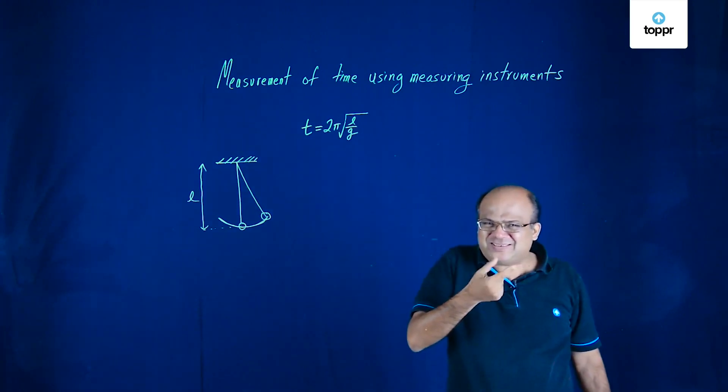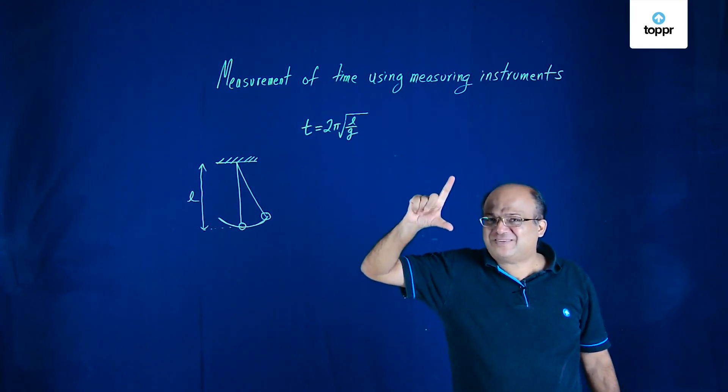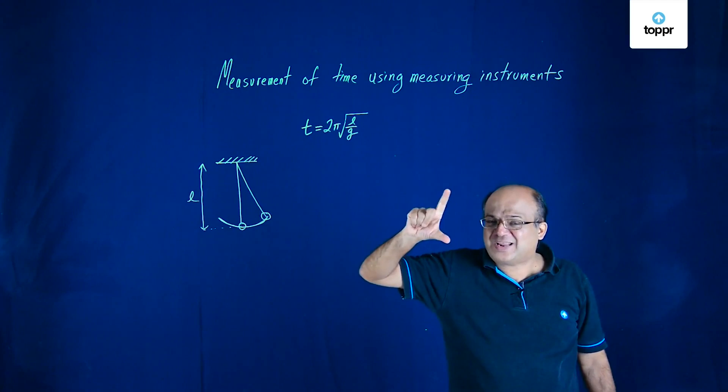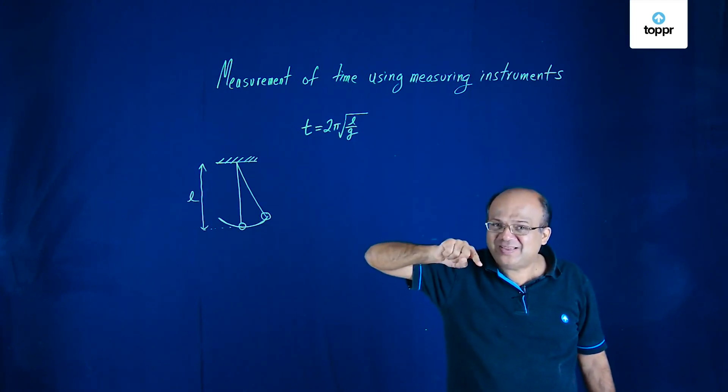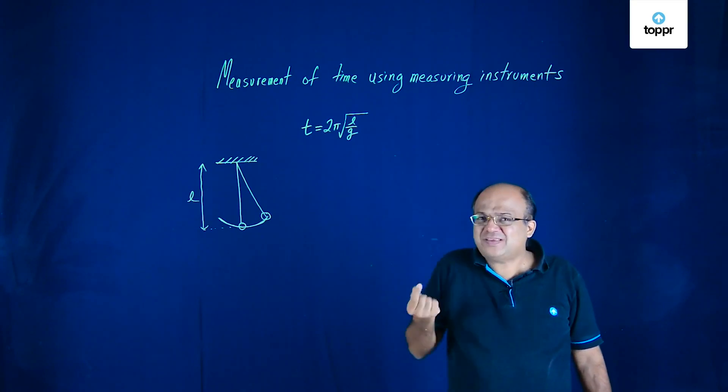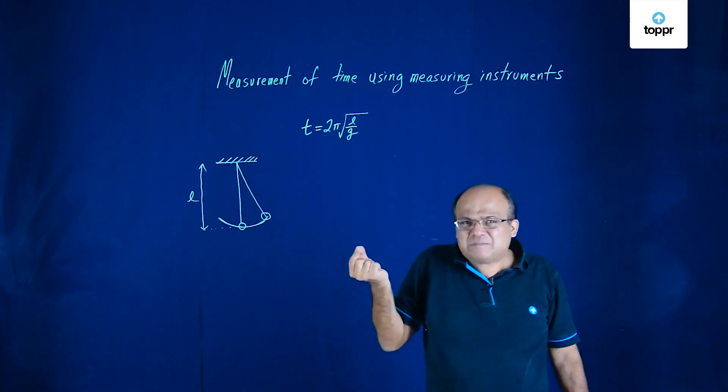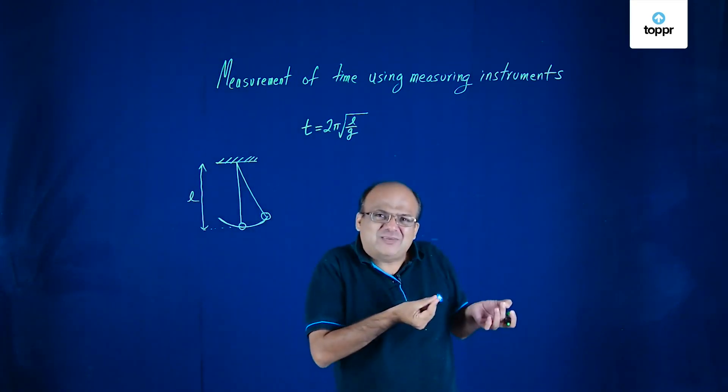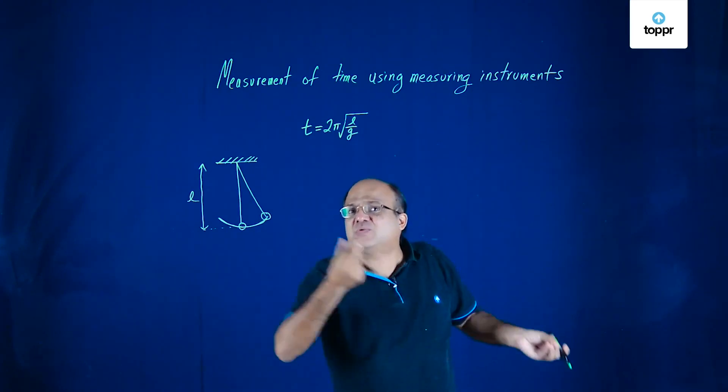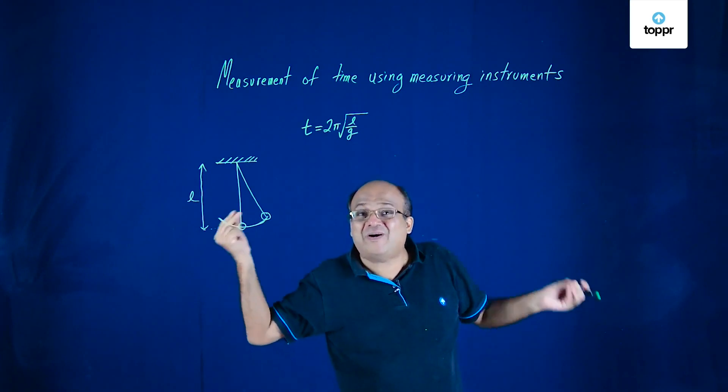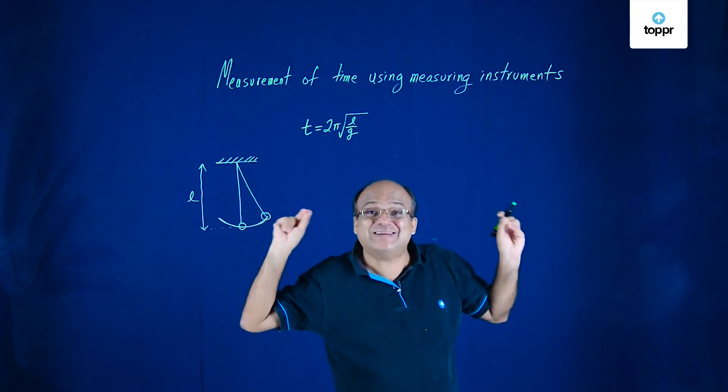You've got stopwatch. Stopwatch is there—we start some time and then the time keeps on increasing. Again you press it again, it stops. So that is an instrument for measuring time. This way we measure time: we can have analog watch, we can have digital watch, we can have simple pendulum. All these are instruments for measuring time.